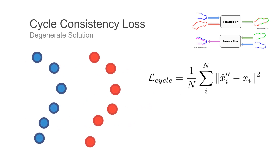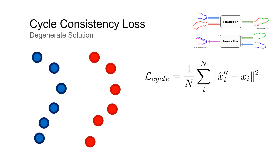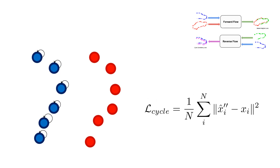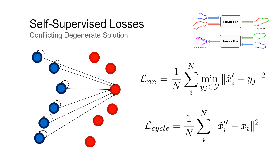This cycle loss also has a degenerate solution, which is to predict zero forward and backward flow at all points, leading to zero loss. This local minima, however, is countered by our nearest neighbor loss. Thus, combining them helps avoid such degeneracies and allows the network to learn the true solution.